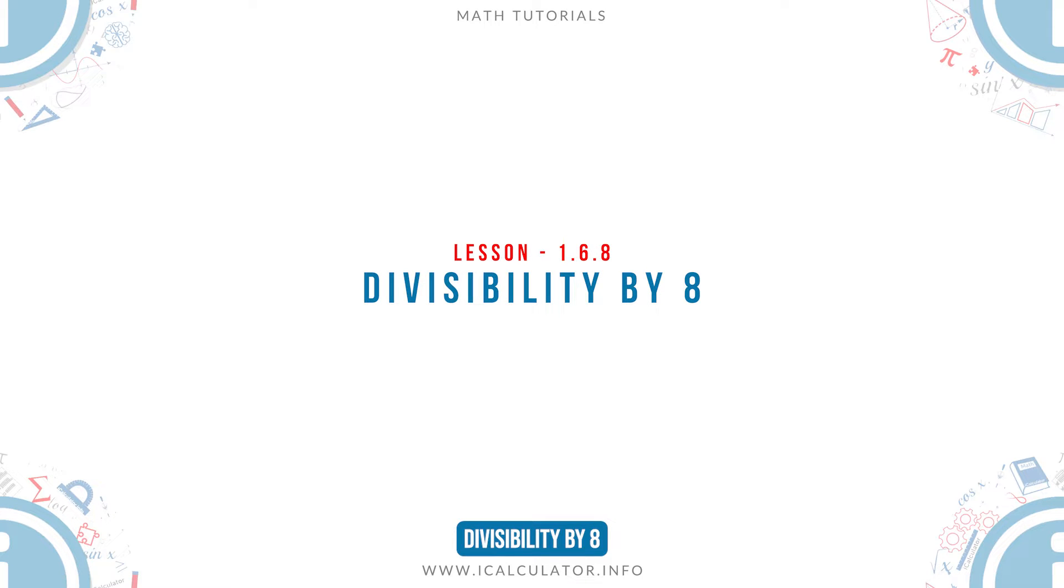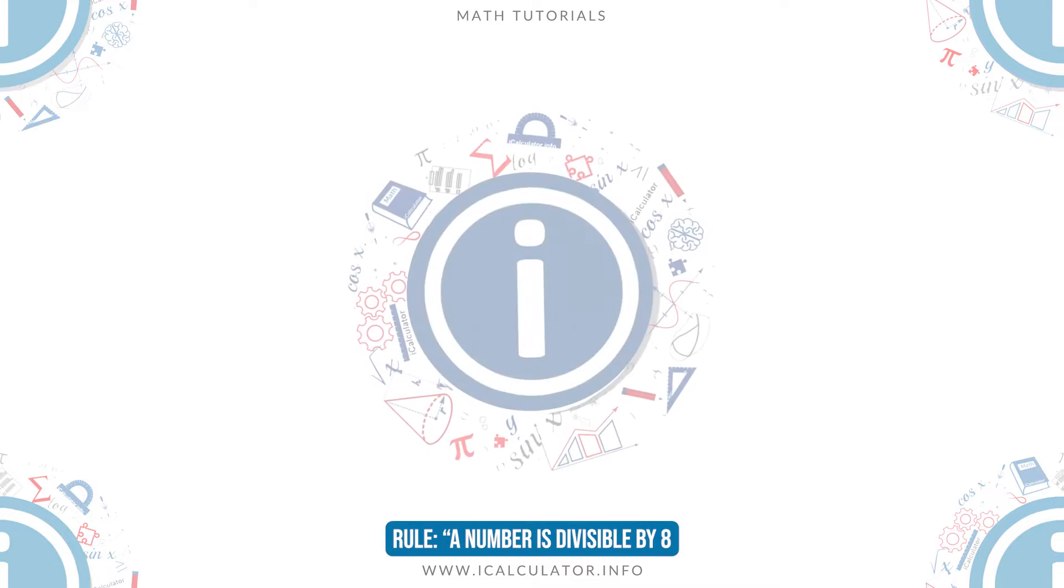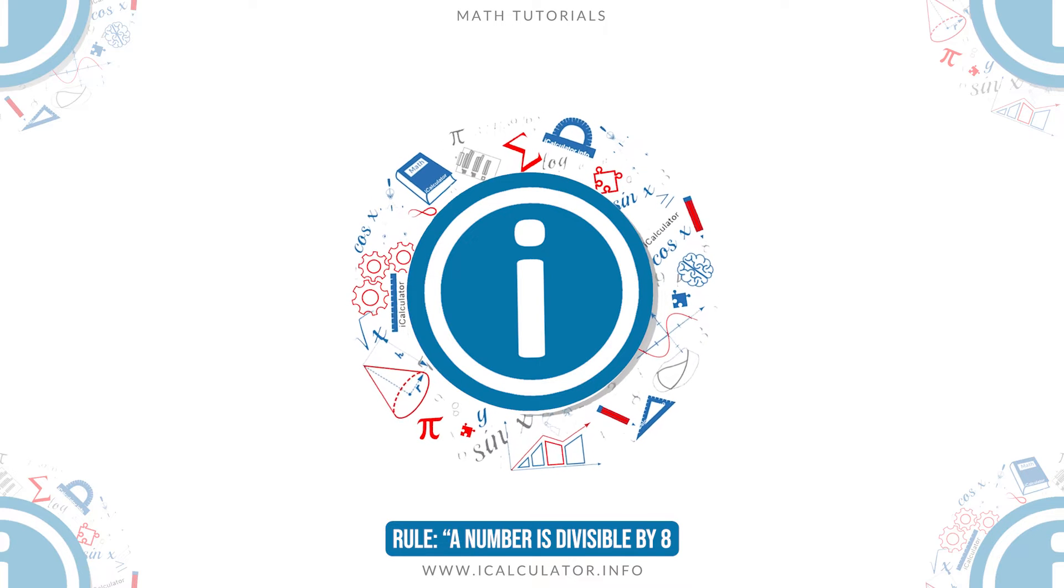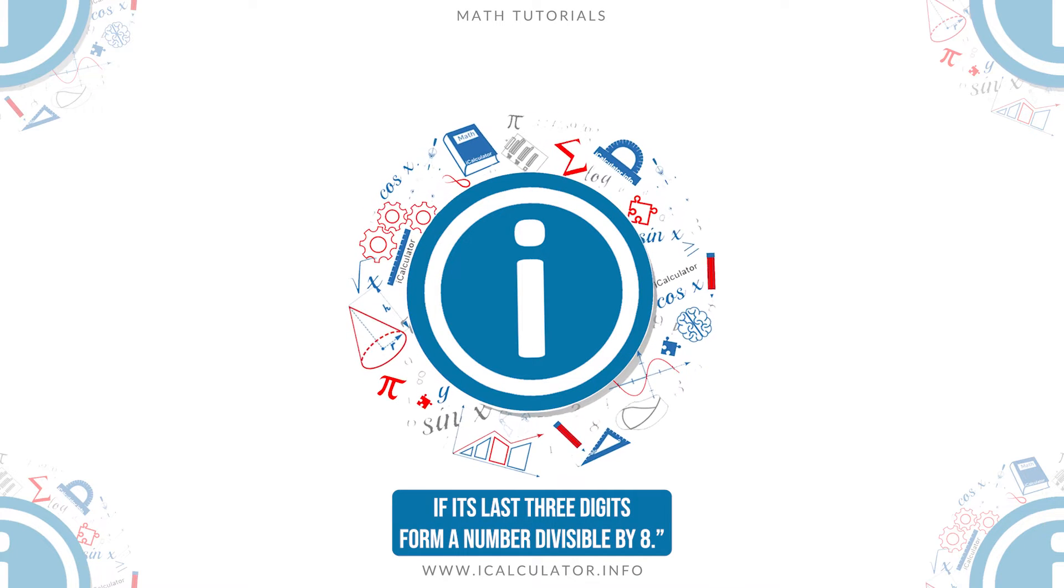Divisibility by 8. Rule: A number is divisible by 8 if its last three digits form a number divisible by 8.